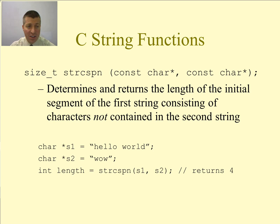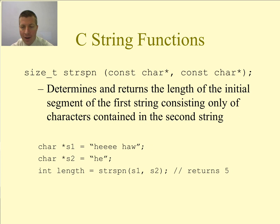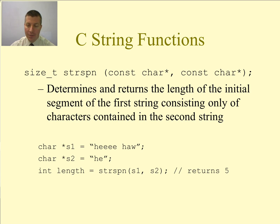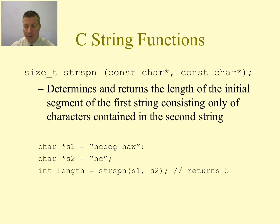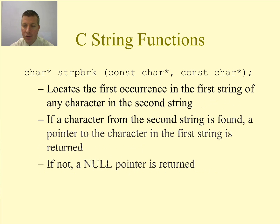So the length returned is 4 — it's kind of a function that can be used for substrings. strspn, on the other hand, determines and returns the length of the initial segment of the first string consisting only of characters contained in the second string. In the example, H, E, E, E, E, E are all in the second string, but space is not — so it returns five.